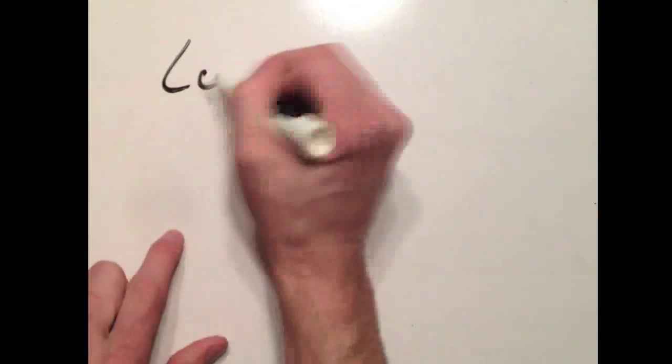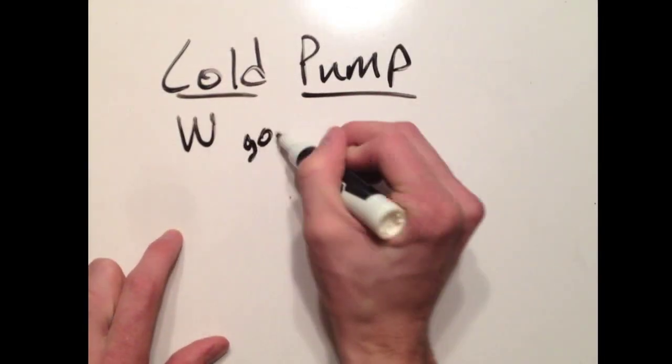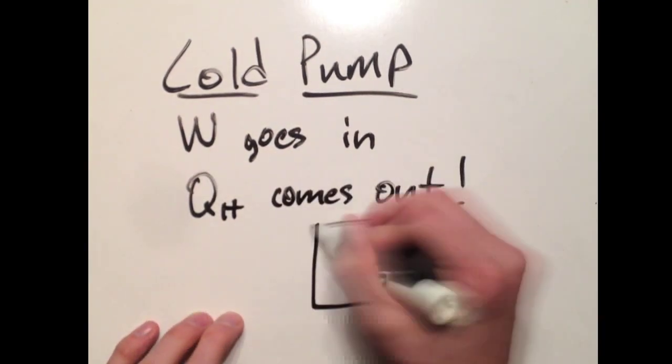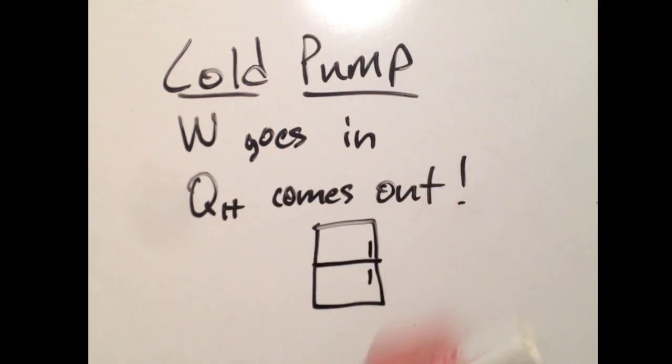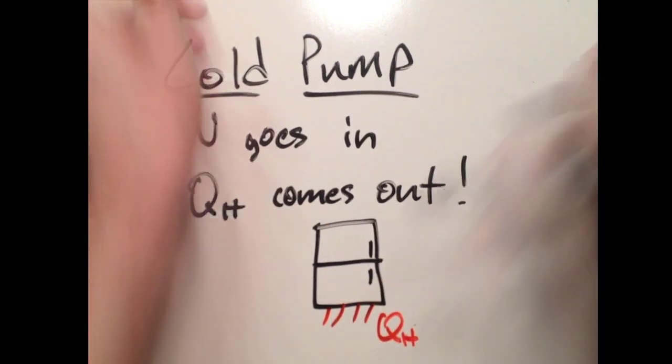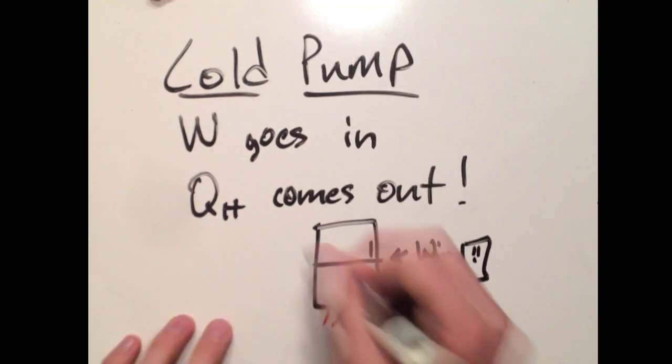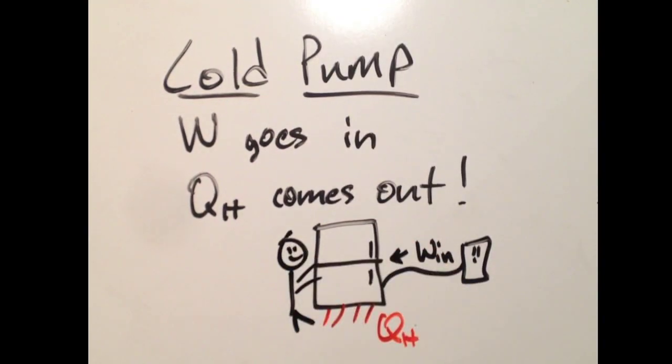Counterclockwise, this is a cold pump. For a cold pump, work goes in and heat comes out. So think about your refrigerator. Your feet are really cold. You can put them underneath the fridge because that is where your heat exhausts. Work goes in, heat comes out, and your feet are happy.